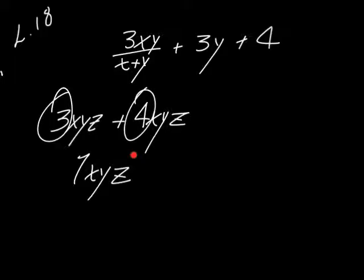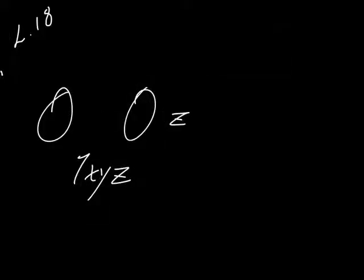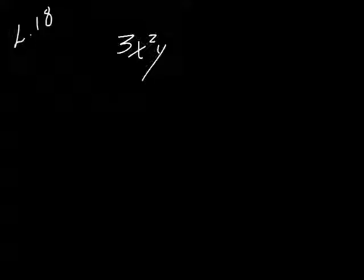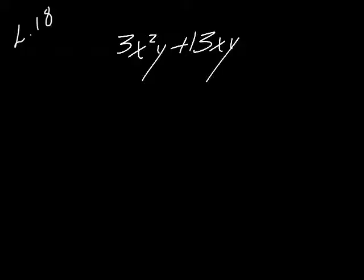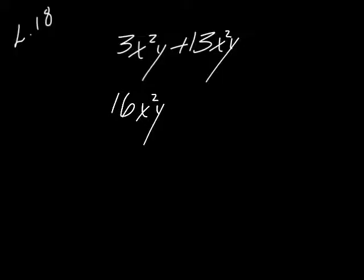Not only do the terms have to be alike, but the exponent on the variables has to be alike. So 3X²Y plus 13XY — we have the same letters, so you would think they were like terms, but because this has a 2 on it and this does not, they are not like terms and you can't combine them. They are left just like they are. But as soon as I put a 2 on here, now I can say 13 plus 3 is 16 and then tag my letters on.